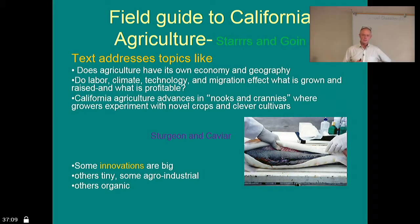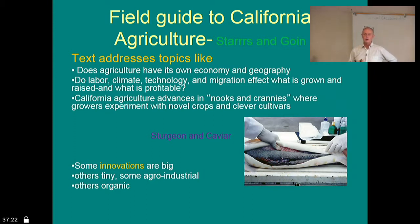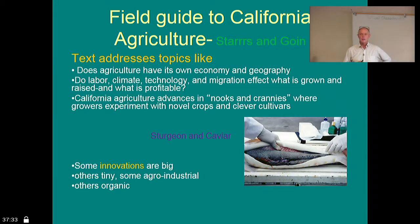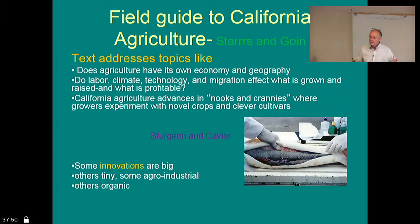California agriculture is grown in all kinds of places — there's little operations up here that we don't know about. For example, we've got some jujubes; that's an industry growing very fast up here with Korean American farmers. There's always novel crops and clever cultivars being developed. A few years ago, someone was growing sturgeon in little plastic ponds and producing his own caviar in the Central Valley — a little nook and cranny of innovation you just wouldn't expect.